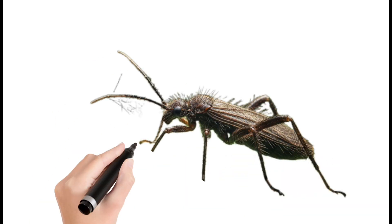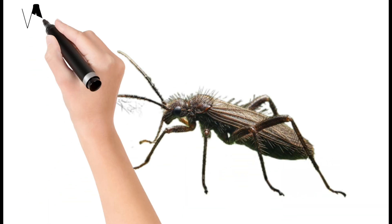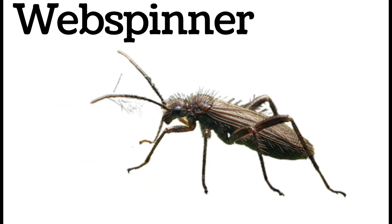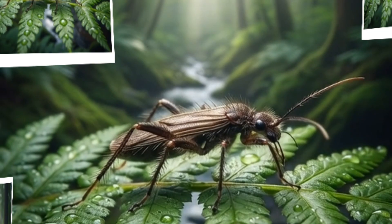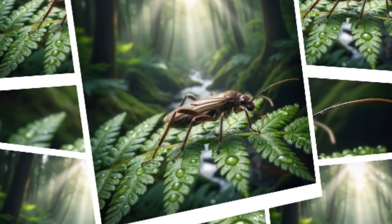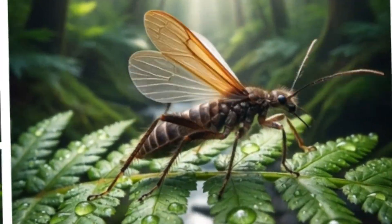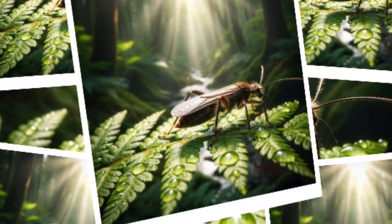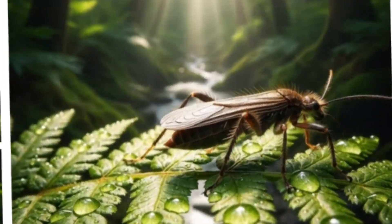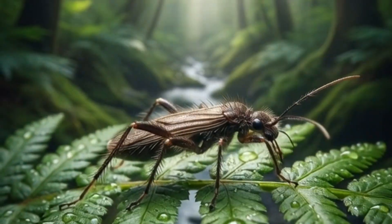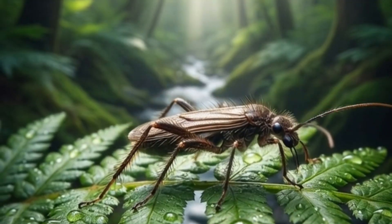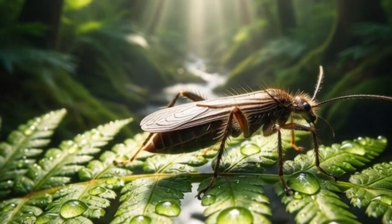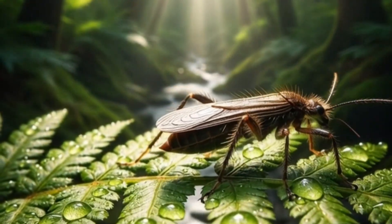Next, web spinner: small insect that spins silk tunnels. Lives in bark and leaf litter. Has enlarged front legs. Moves quickly inside silk webs. Found in tropical areas.